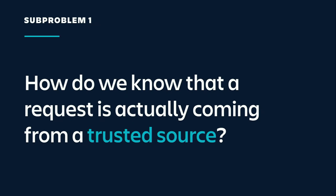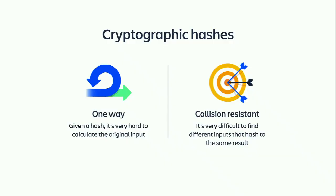Our first top problem: we've decided to use JWTs, but how do we know that it's coming from a trusted source? Let's talk about cryptographic hashes — kind of like normal hashes, but better. There are many properties of hashes that make them useful. They're also sometimes known as one-way functions. Given a hash, it should be very difficult to find the original input — impossible, really.